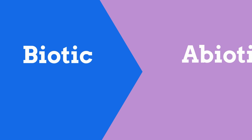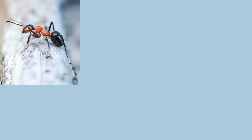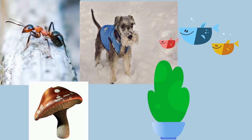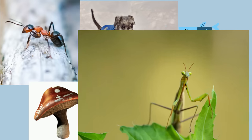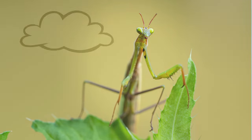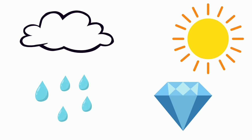and abiotic, which are non-living objects. Ants, dogs, fish, mushrooms, plants, and this praying mantis are examples of biotic factors. Clouds, sunshine, water, and diamonds would be examples of abiotic factors.